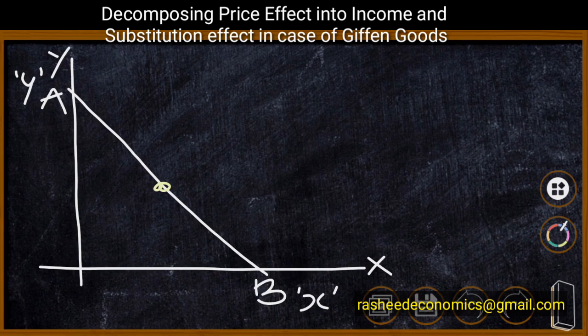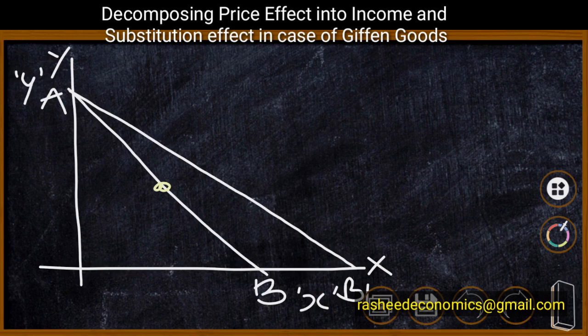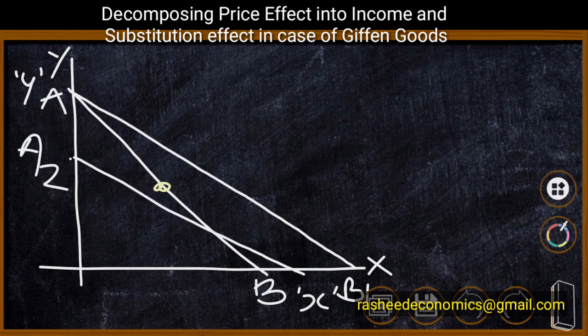When the price of product X decreases, the consumer is able to consume more of product X, and the new income-price line becomes AB1. Now we are going to do the process of compensating variation — that means we are going to take away some amount of money from the consumer. For this purpose we take away AA2 amount of money, and the new income-price line becomes A2B2.